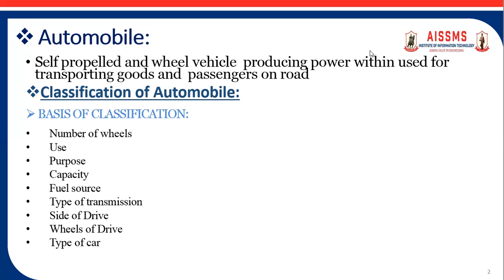According to the type of transmission, some are automatic transmission vehicles, some are manual transmission vehicles, and some are semi-automatic. In automatic transmission, changing of the gear takes place automatically. In manual, gear changing is done manually. In semi-automatic, you can switch between automatic and manual mode.